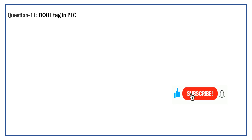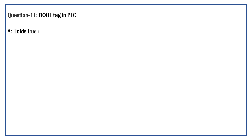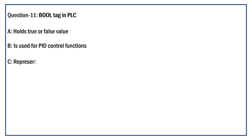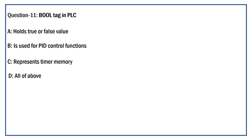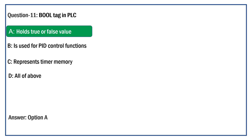Which is the correct statement for a bool tag in PLC? Option A: It holds true or false value. Option B: It is used for PID control function. Option C: It represents the timer memory. Option D: All of the Above. The right answer is Option A: It holds true or false value. Yes, the bool tag in PLC can hold a true or false value.